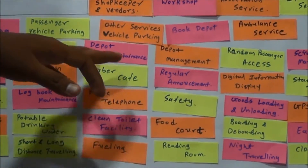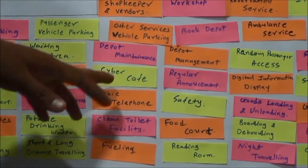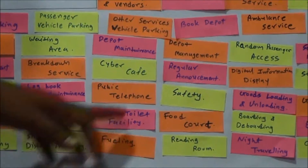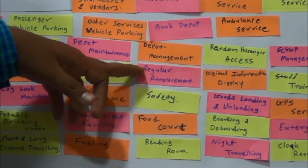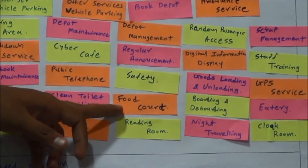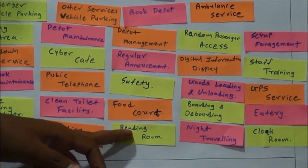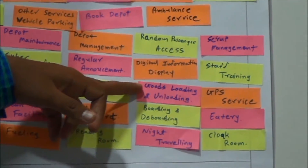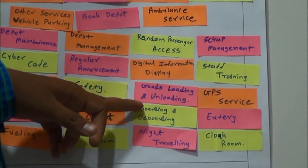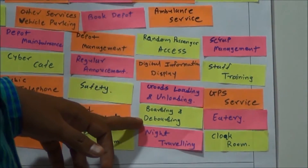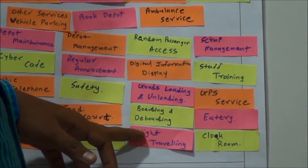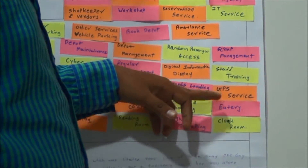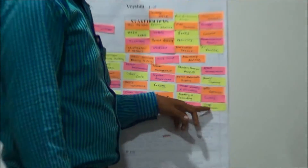Other services include vehicle parking, depot maintenance, cyber cafe, public telephone, toilet facilities, fueling, depot management, regular announcements, safety, food court, reading room, random passenger access, digital information display, good loading and unloading facilities, boarding and de-boarding of passengers, night travelling, scrap management, staff training, GPS service, eatery, and clock.